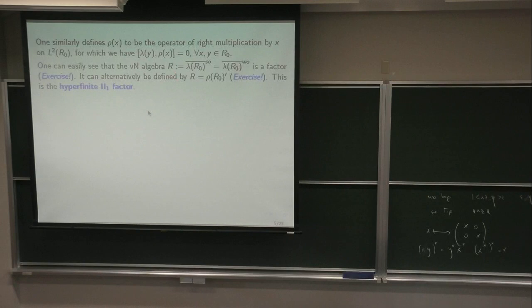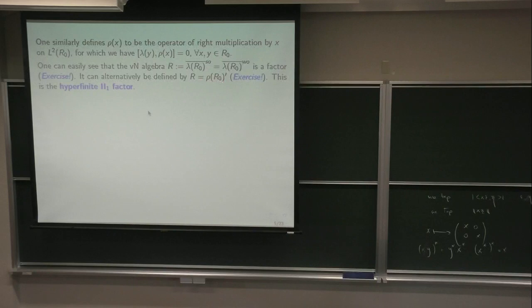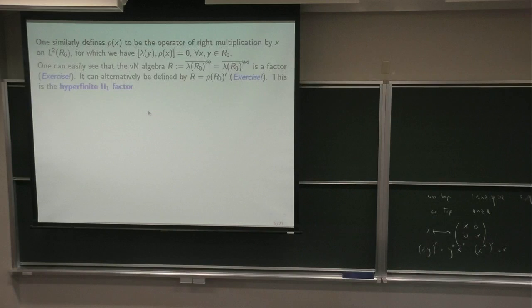One can easily see that the von Neumann algebra — which is the strong operator closure of the image — is a factor. That's an exercise, because of the way this inductive limit works. One can alternatively define it as the commutant of rho of R₀ — that's another exercise. The proof is very similar to the proof that A was maximal abelian: that anything commuting with it was a multiplication operator by something in L-infinity. It's really identical.